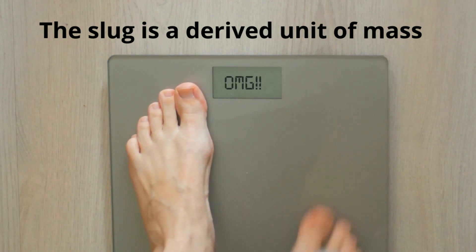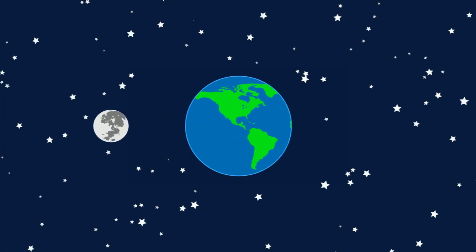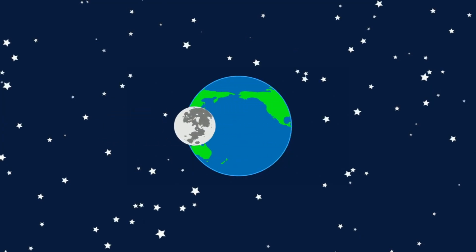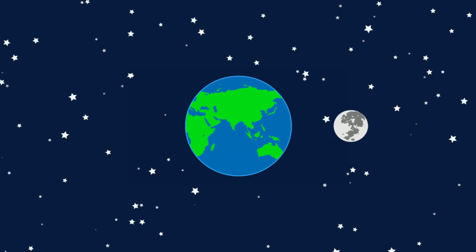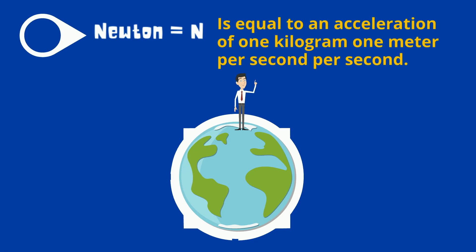Weight is a measure of the force that gravity is pulling on the object. Gravity is a force, and therefore weight technically should be measured in Newtons. A Newton is equal to the acceleration of 1 kilogram at 1 meter per second squared.